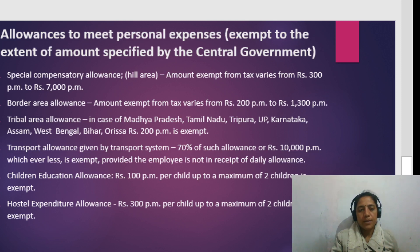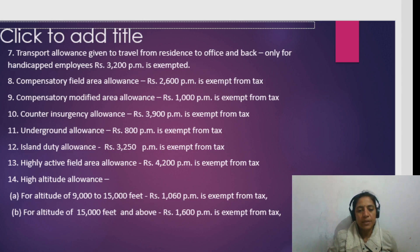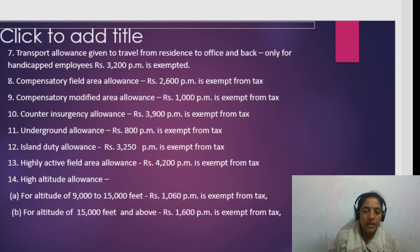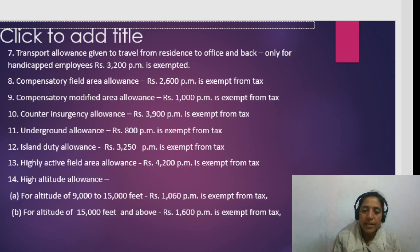Transport allowance given to travel from residence to office and back: only for handicapped employees, Rs. 3,200 per month is exempt. For other employees, Rs. 1,600 per month is the standard exempt amount. For handicapped employees only, Rs. 3,200 per month is exempted; the rest is fully taxable.